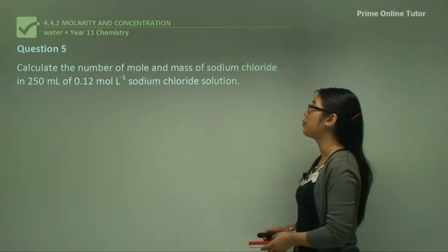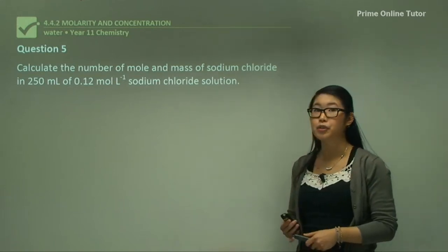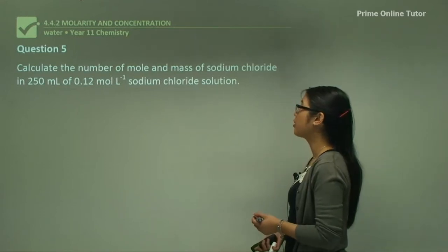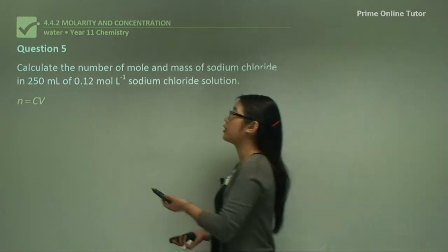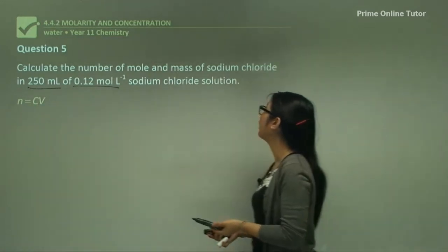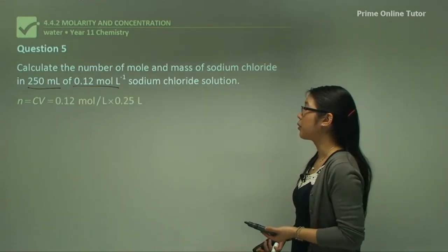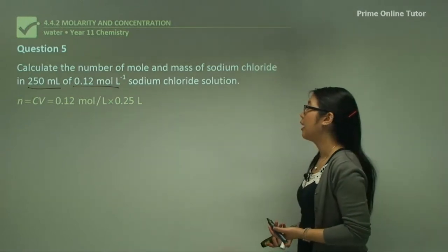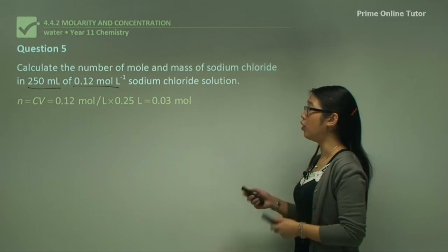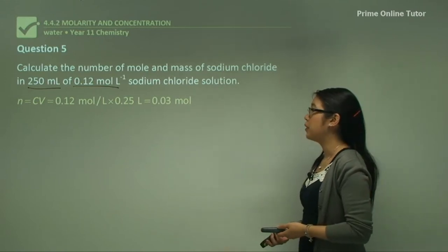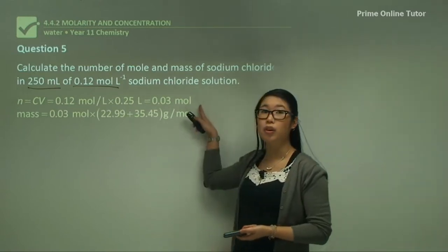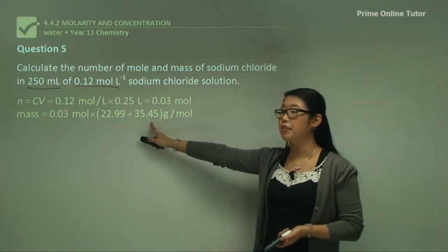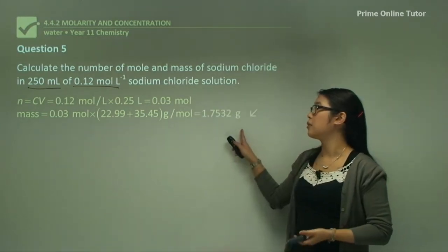Question 5: Calculate the moles and mass of sodium chloride in 250 mL of a 0.12 molar solution. Using N equals C times V: N equals 0.12 times 0.25 litres, giving 0.03 moles of NaCl. To find the mass, multiply 0.03 moles by the molar mass of NaCl (22.99 plus 35.45), giving a mass of 1.7532 grams.